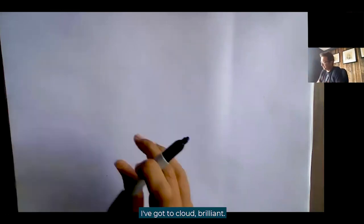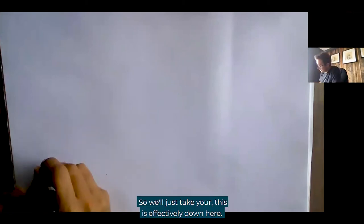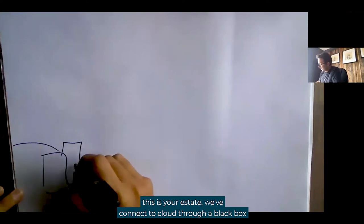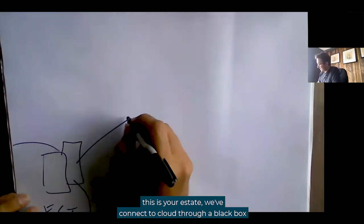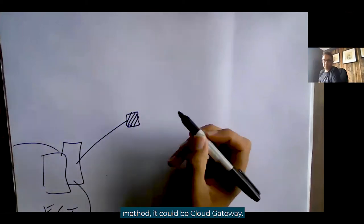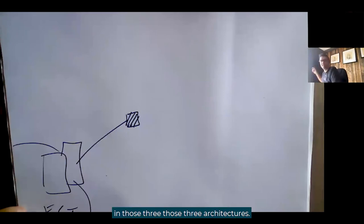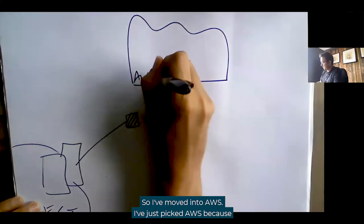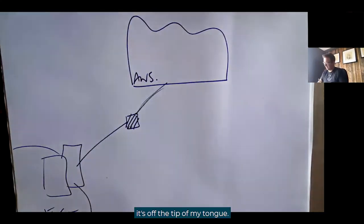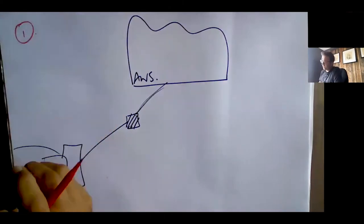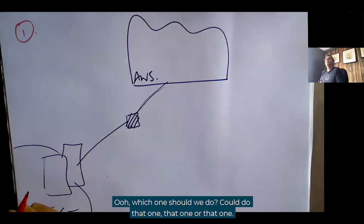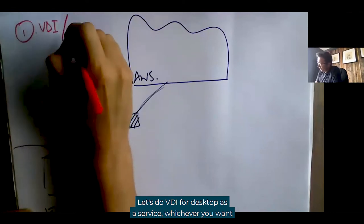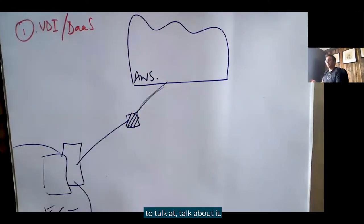Right. I've got to cloud. What am I going to do? This is effectively your estate down here. We've connected to cloud through a black-box method — it could be Cloud Gateway, it could be the VPN, it could be the Direct Connect from those three architectures. So I've moved into AWS. Number one: let's do VDI — Virtual Desktop Infrastructure — or desktop as a service, whichever you call it.